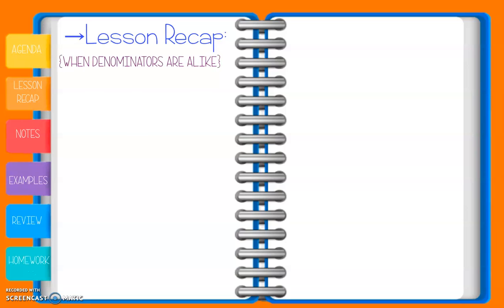So first off, let's talk about when denominators are alike. Hopefully you think it's super simple to add fractions when denominators are alike, because all we have to do is add the numerators, keep the denominators, and then simplify as needed.